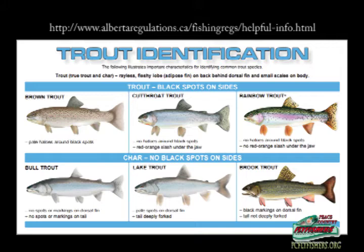The rainbow trout is one of the native species to Alberta, but it's only native in the Athabasca River drainage. Cutthroat trout are also native to Alberta, mostly in southern streams south of Calgary — foothill streams, rivers like the Crowsnest, the Oldman River. The Bow River used to be a phenomenal fishery for cutthroat trout, but they're no longer there. Brook trout are an introduced species from eastern North America. Their range extends from North Carolina right up through the Maritimes, Ontario, Quebec, into Labrador, right across Hudson's Bay into some rivers in Manitoba — a very large range.